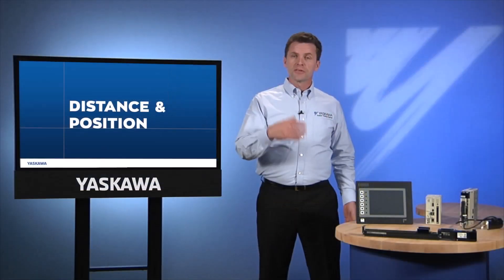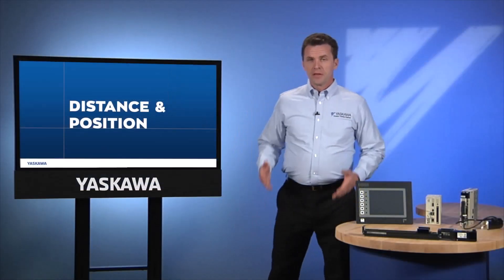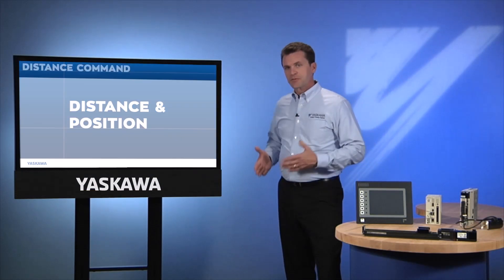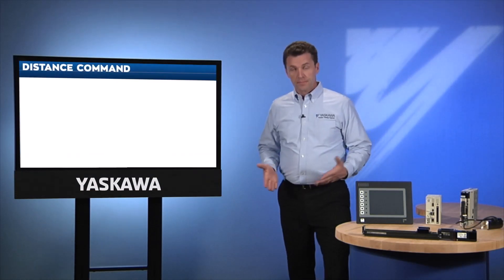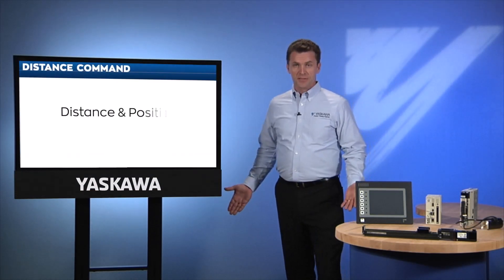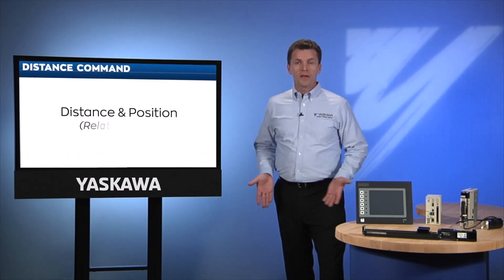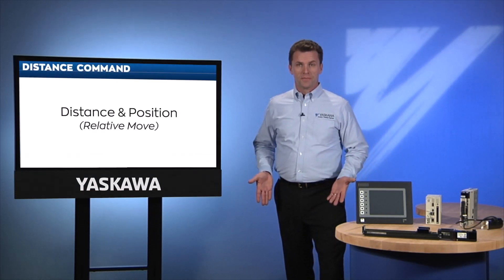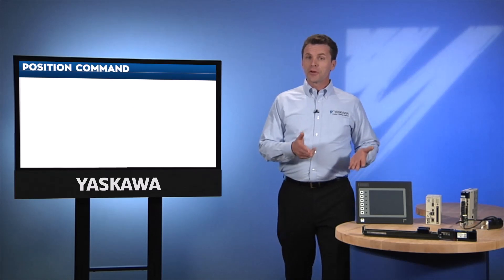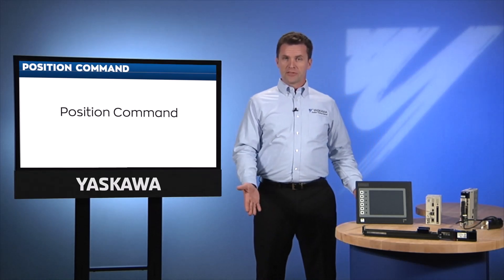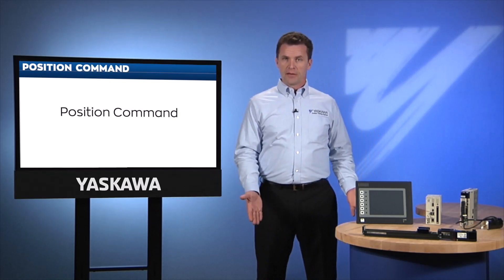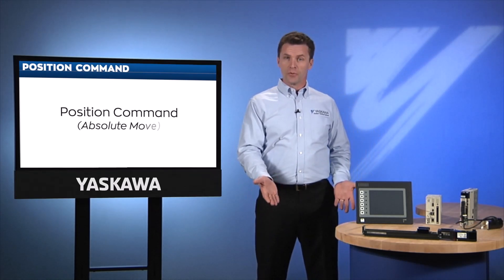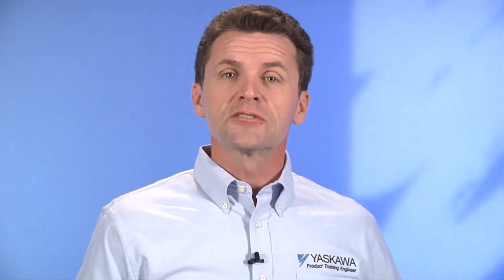Here's an example. If you order me to take three steps forward, that's a distance command — a relative move. If you tell me to go to the table, that's a position command — an absolute move. It's the same result: I'm at the table, but the type of command is different.